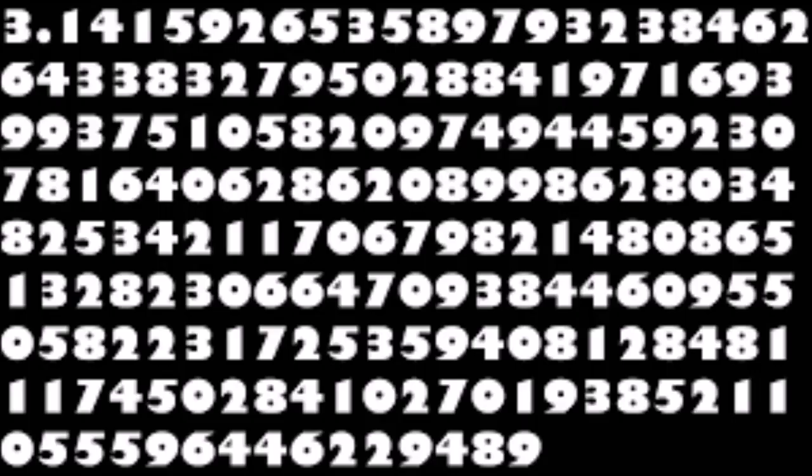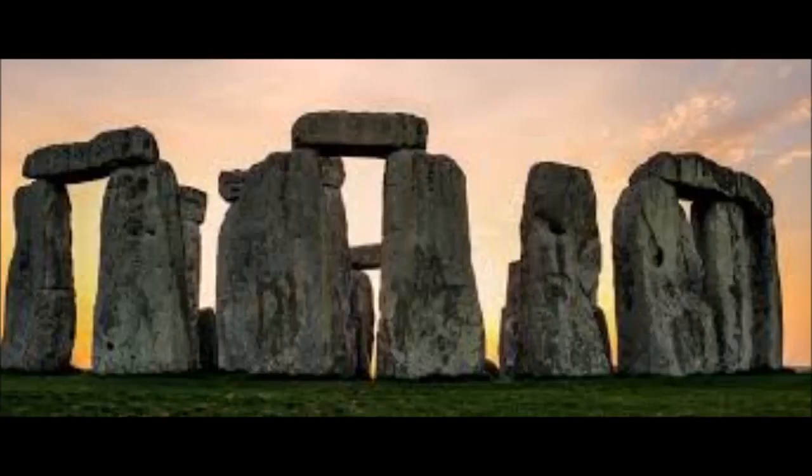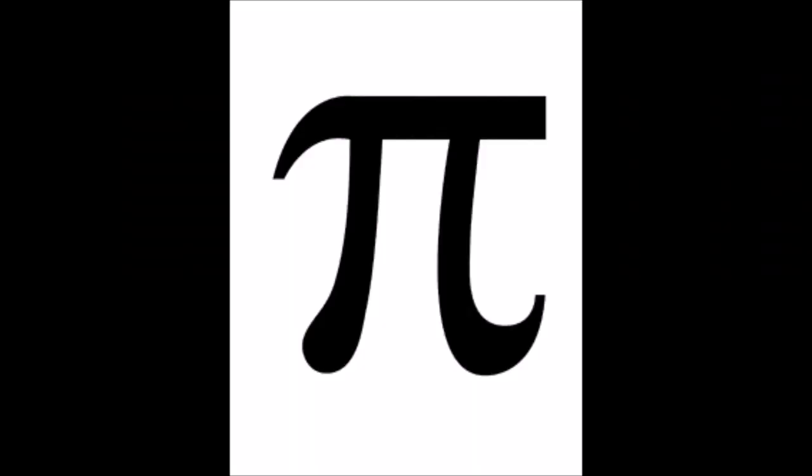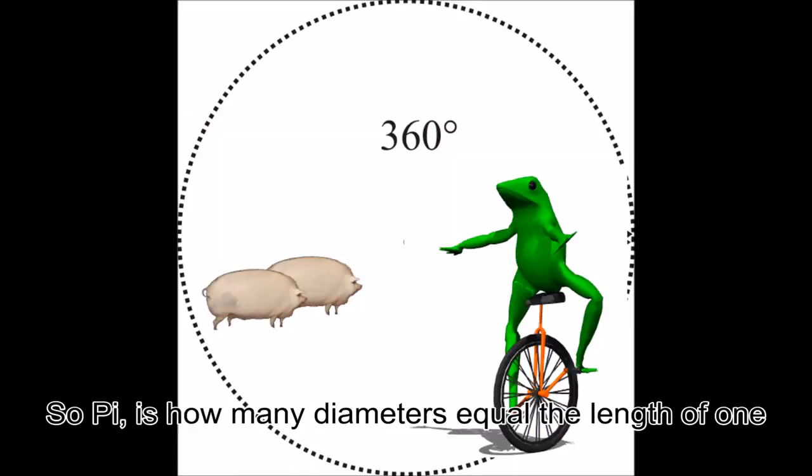Think of it like three and a half diameters, except it is actually 3.141592653589793238462643310 etc. diameters in reality. Instead of having to write that number all of the time, they gave it this Stonehenge looking symbol instead. So pi is how many diameters equal the length of one circumference.